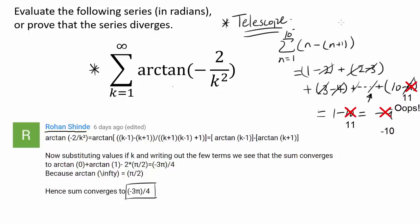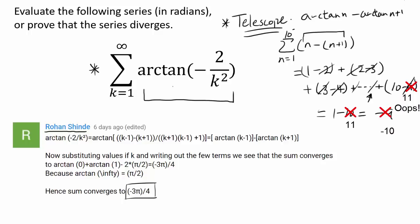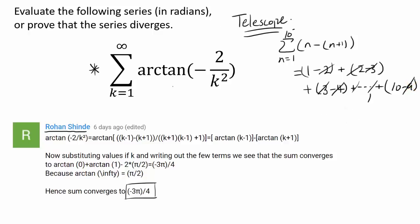Sums like this are called telescoping sums, where all the intermediate values cancel out. Since we know in trigonometry there are lots of summation and difference identities, we may think that if we can somehow convert this expression to something like arctangent of n minus arctangent of (n plus 1) using some trig identity, we may be able to make the sum telescope and cancel out the intermediate values.